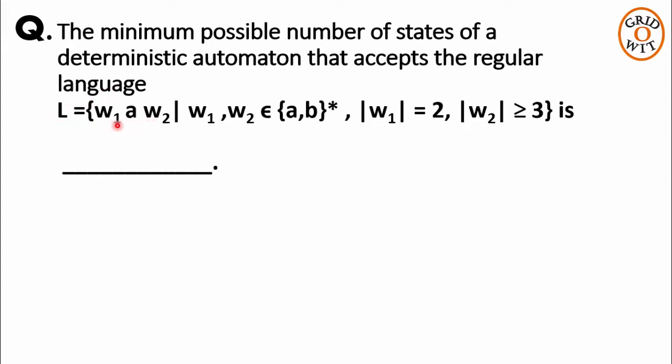Where the length of w1 is exactly 2 and the length of w2 is greater than or equal to 3. w1 and w2 are strings over a or b, and we have to find the number of states in minimum DFA.